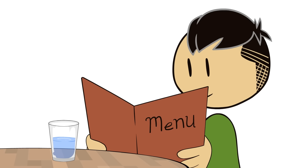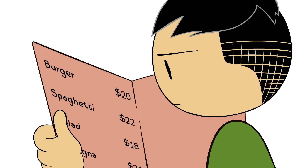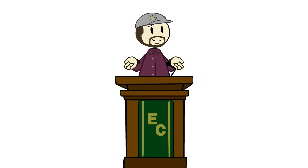A really great example of this out in the real world are restaurant prices, because they manipulate us all the time. Of course, at a restaurant, when you have a menu in front of you, you're free to choose what you want or even walk away, right? Well, sort of.